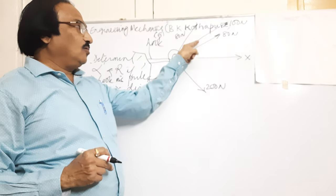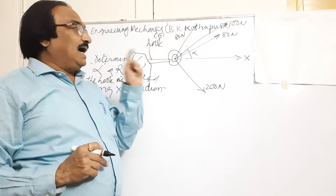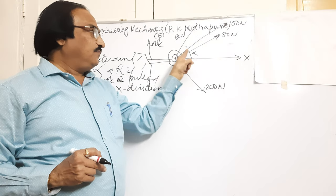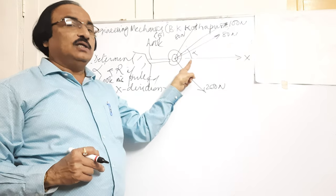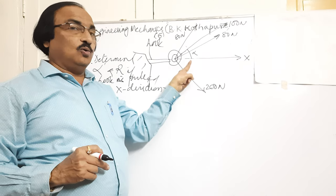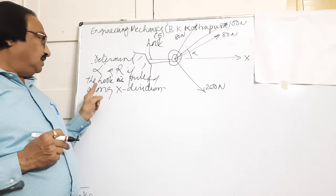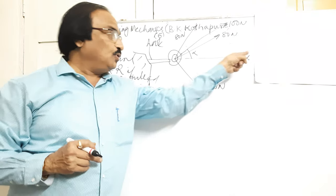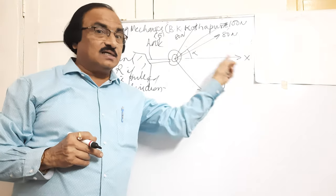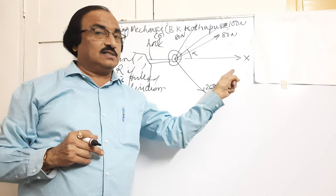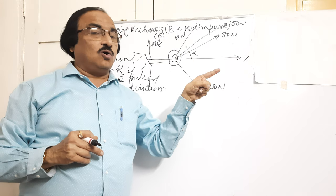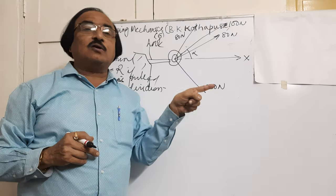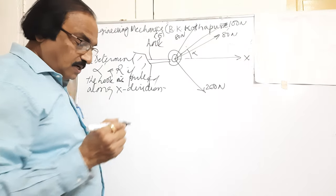A hook is there. There are four forces acting on the hook. The 100 Newton force has an unknown angle. You are required to find out that unknown. The given condition is the resultant is moving in the x direction — the hook is pulled in x direction means the resultant is acting in the horizontal direction. When the resultant is in the horizontal direction, the vertical component will be 0.